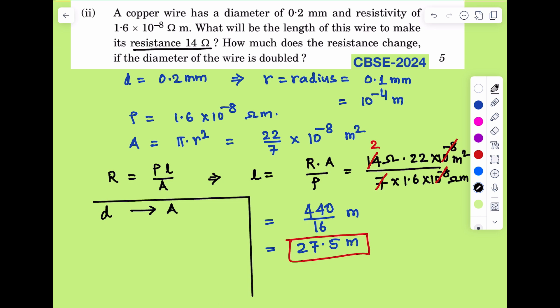If diameter of the wire is doubled keeping the length same, that means d dash is equal to 2d. This implies A dash will be equal to 4 into area. Area becomes 4 times. Hence we know that R is equal to rho L by A.